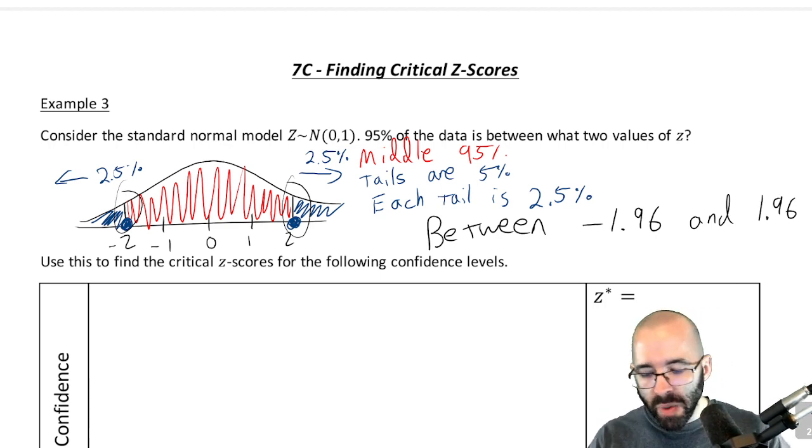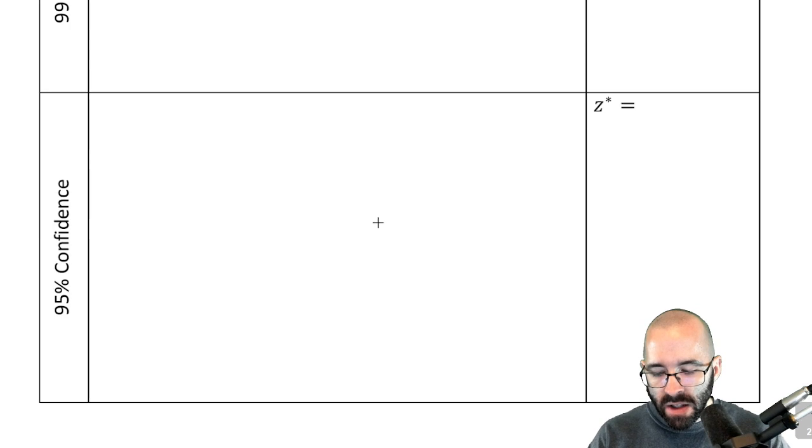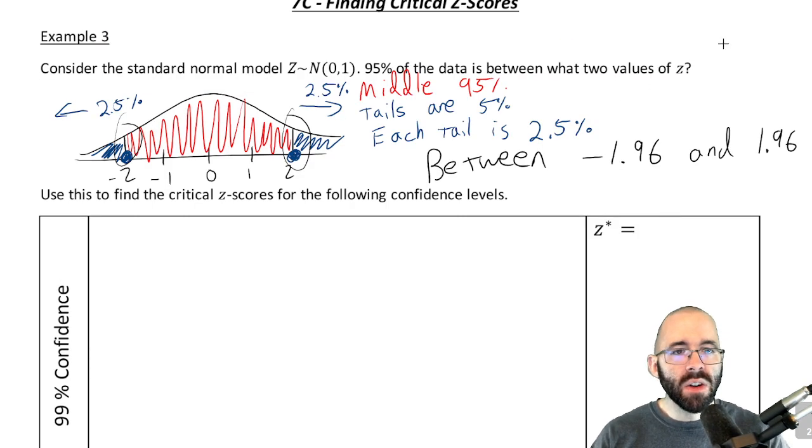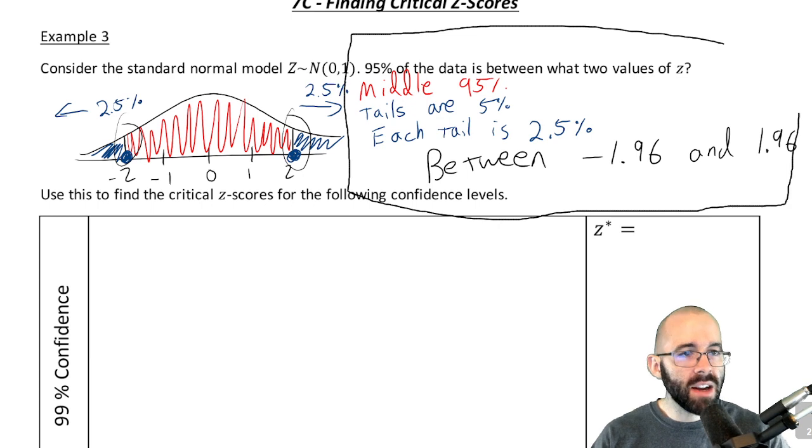So what we're going to be doing in this video today is looking at different confidence levels and finding what their critical z-scores are. And we've already done the first one. What do you think the critical z-score is for a 95% confidence interval? It'll be 1.96.